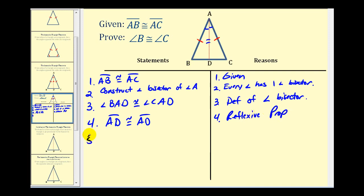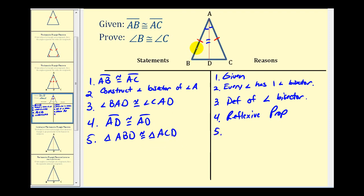And now we have enough information to state that the two small triangles are congruent to one another. So we can say that triangle ABD is congruent to triangle ACD — remember these vertices must be listed in corresponding order. The reason for this is the side angle side postulate. And since these two triangles are congruent, we can conclude that angle B is congruent to angle C.